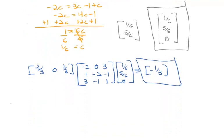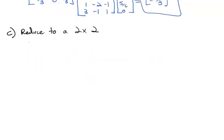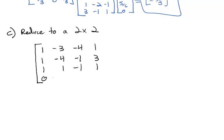Let's try reducing one more example — this time a four-by-four game where each player has four choices. The matrix is: 1, negative 3, negative 4, 1; 1, negative 4, negative 1, 3; 1, 1, negative 1, 1; and 0, negative 1, 1, 1. First we look for a row where every entry is smaller than or equal to another row.